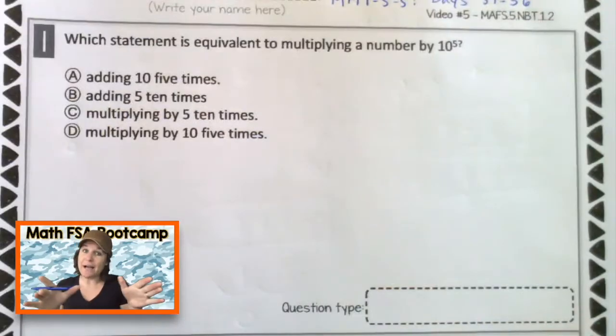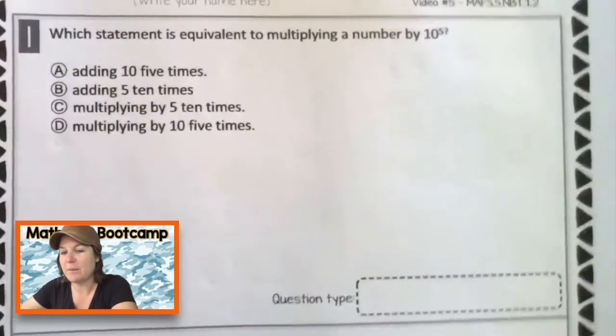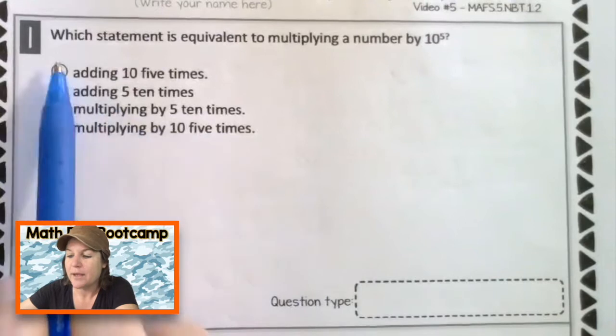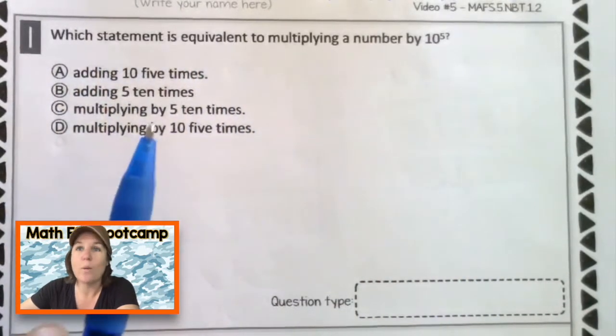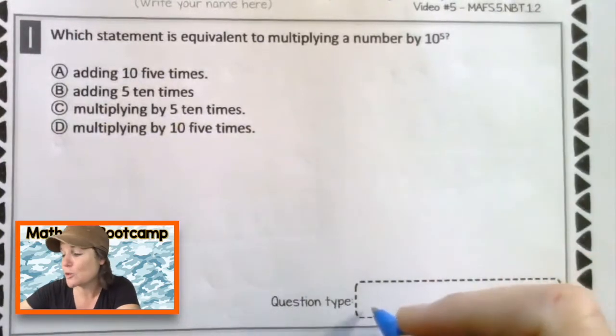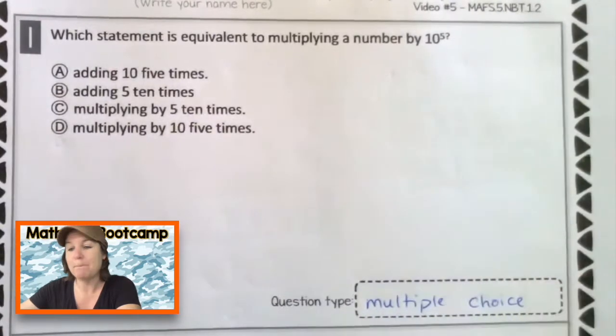Welcome back. Let's see how you did. Number one. First of all, let's talk about the question type upon first glance that we're seeing right here. I'm seeing a question with four answer choices. So what kind of question do you think this is? Yeah, it's going to be a multiple choice question. So write that in there. Multiple choice.